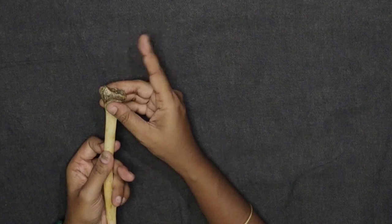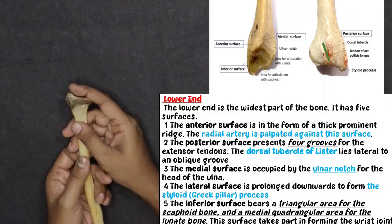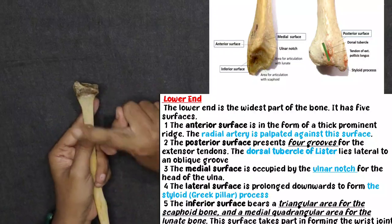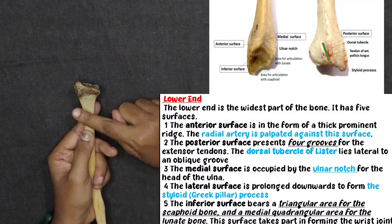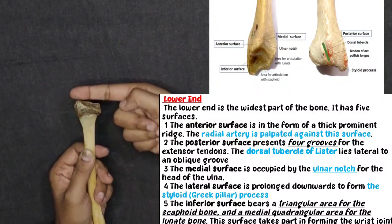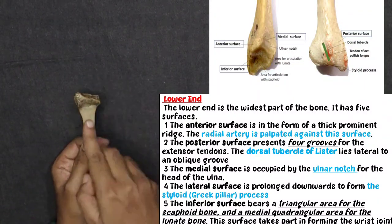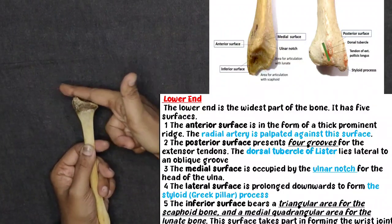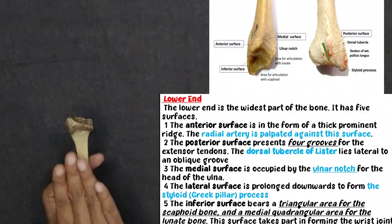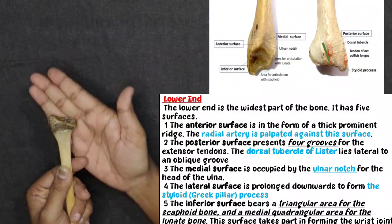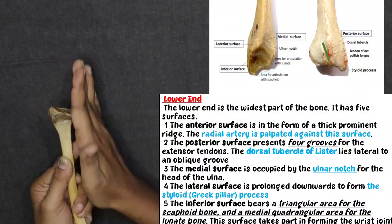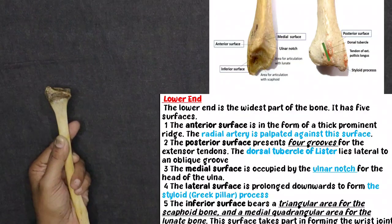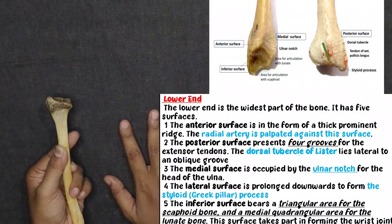Now coming to the lower end. The lower end has 5 surfaces: anterior surface, posterior surface, medial surface, lateral surface, and inferior surface.